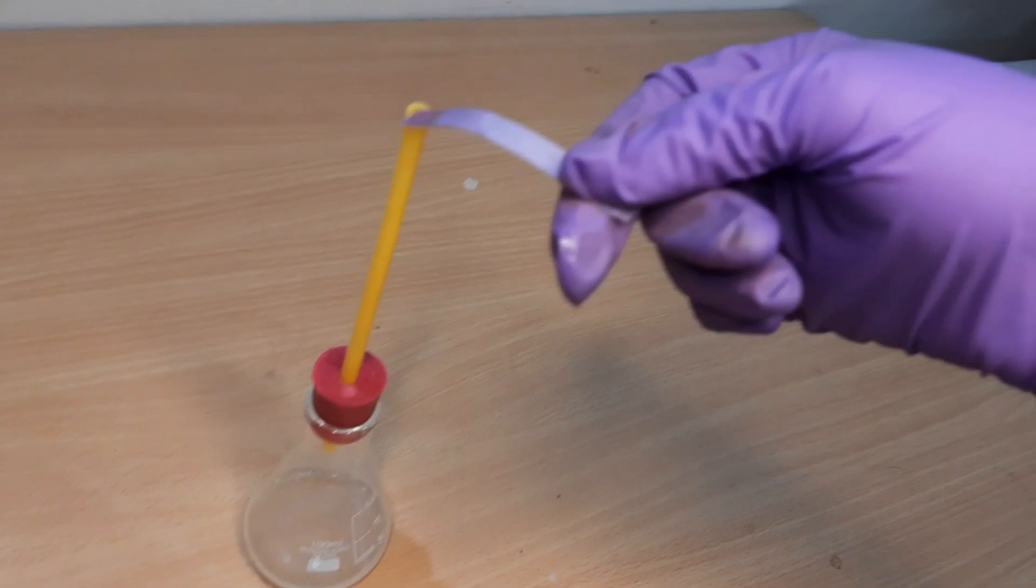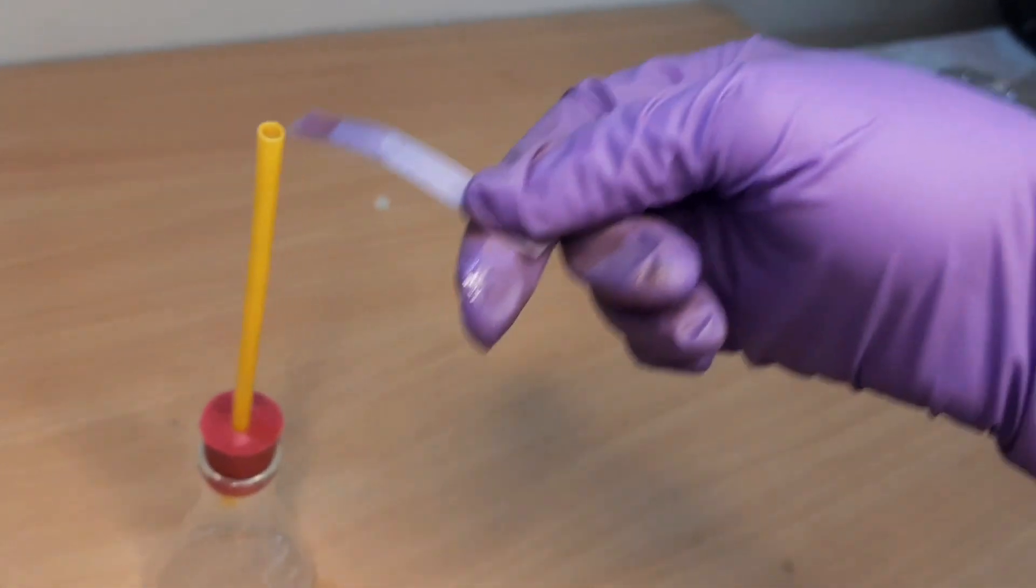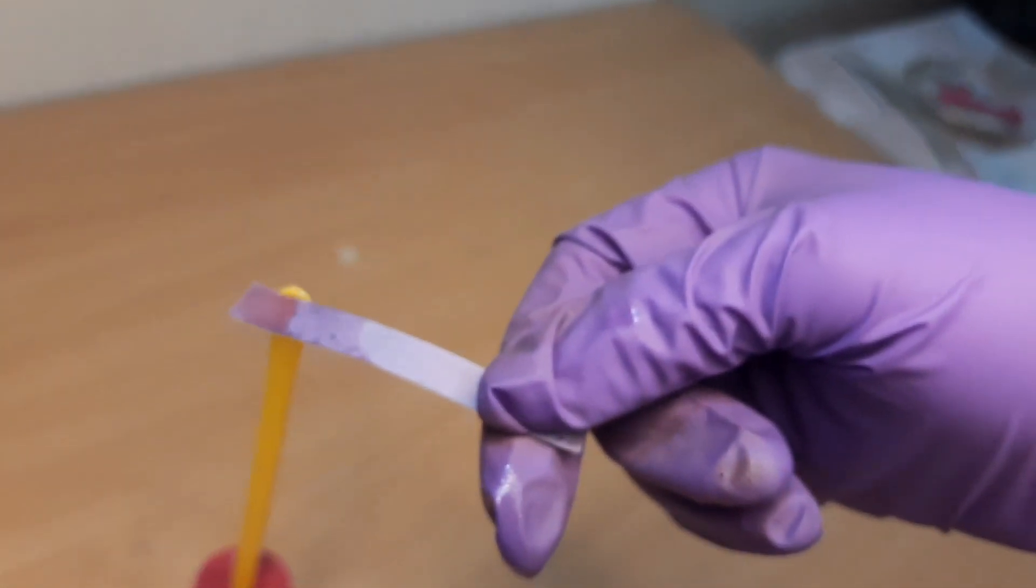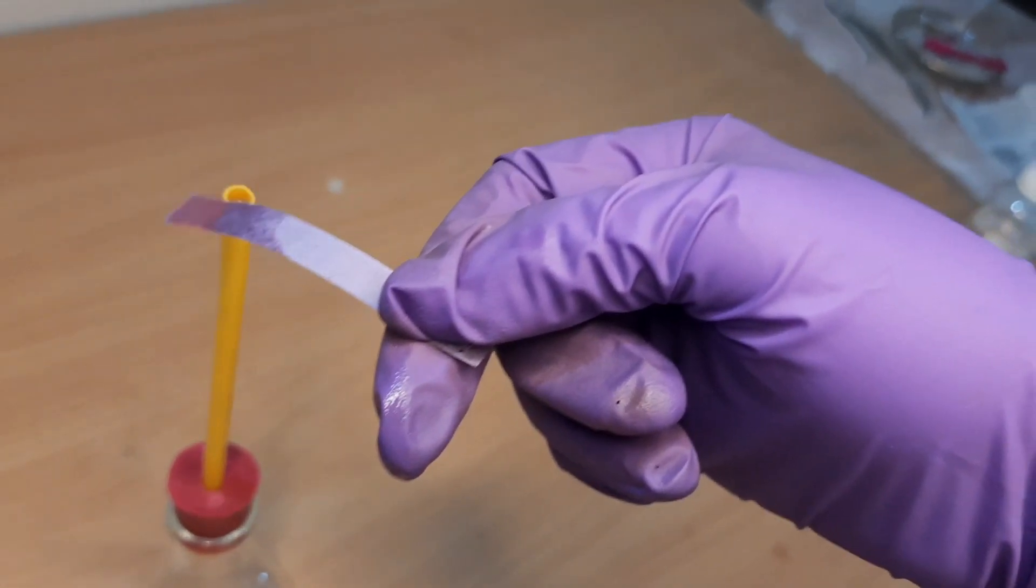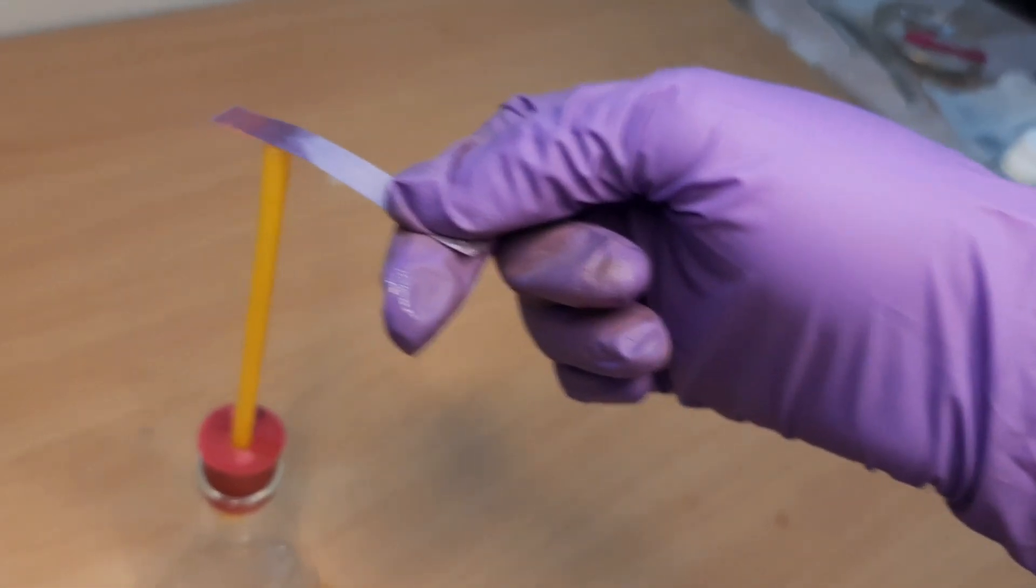Now hold the moist blue litmus paper in hydrogen chloride gas. We will see that moist blue litmus paper turns red. This shows that hydrogen chloride gas shows acidic behavior in the presence of water.